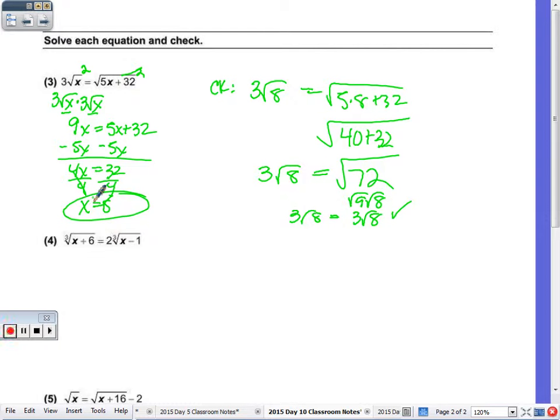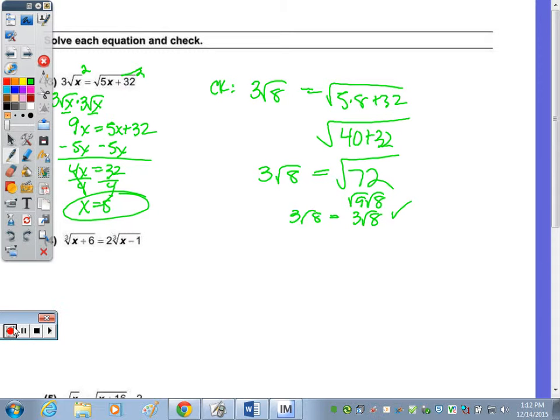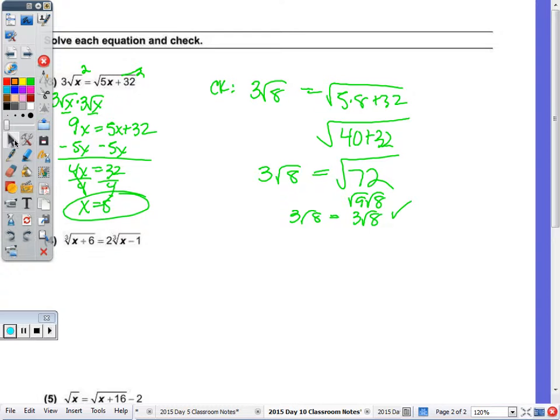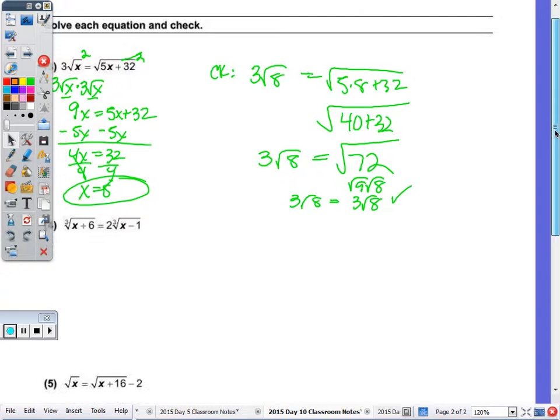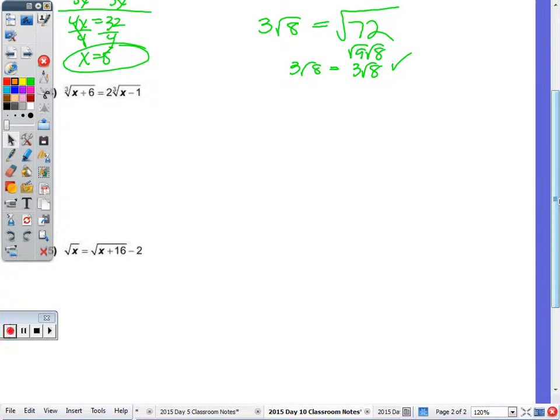Now the next one. Number four. Is there any plus or minus happening to any radical? No. So we start by doing the inverse, in this case, of the cube root, which is cubing. So cube this side, the symbol's gone, we're left with X plus 6. Cube that side. Now you could write it out three times, but let's do it the other way.